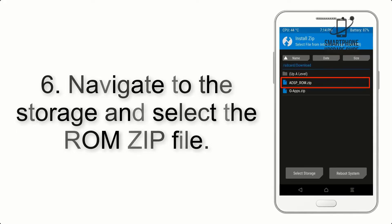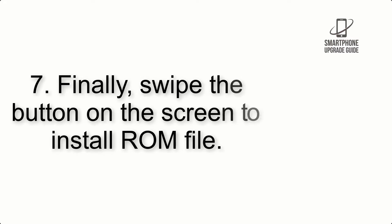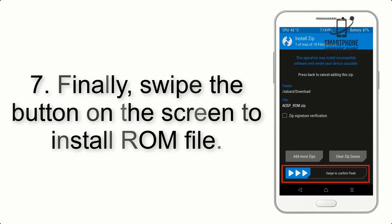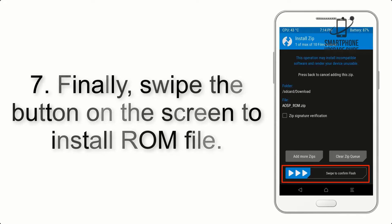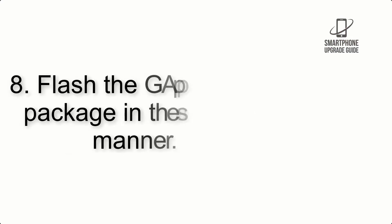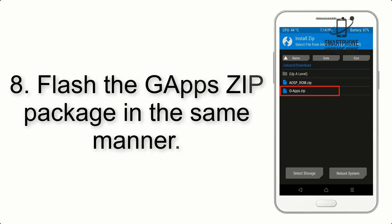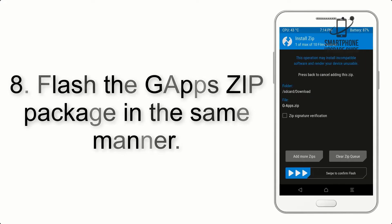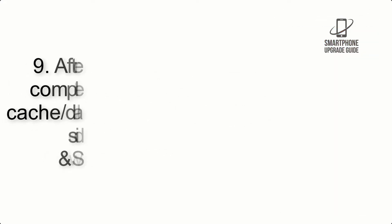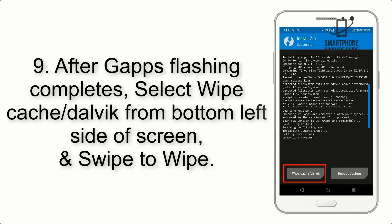Step 6: Navigate to the storage and select the ROM zip file. Step 7: Finally, swipe the button on the screen to install the ROM file. Step 8: Flash the GApps zip package in the same manner.